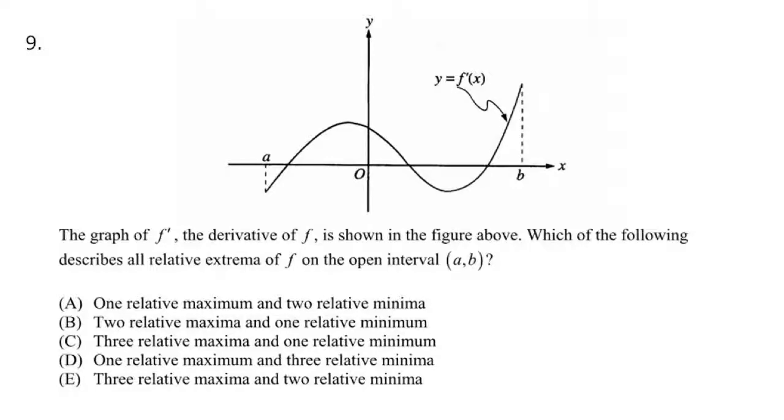Look at this. What is this the graph of? F prime. Look at your answer choices. It's talking about relative min and relative max. Right here. Is that a relative min or a relative max? What's the derivative doing? It's going from negative to positive. So is it a min or max? That's a min. What about over here? We are going from positive to negative. So that's a max.